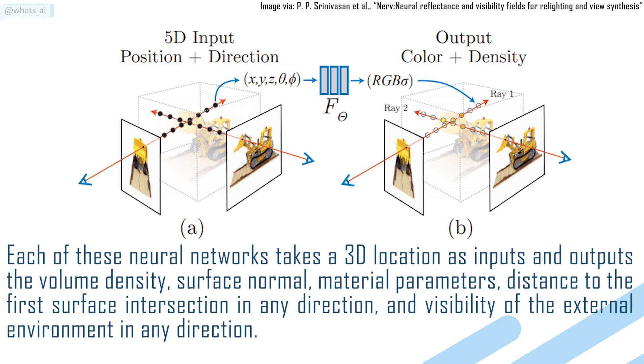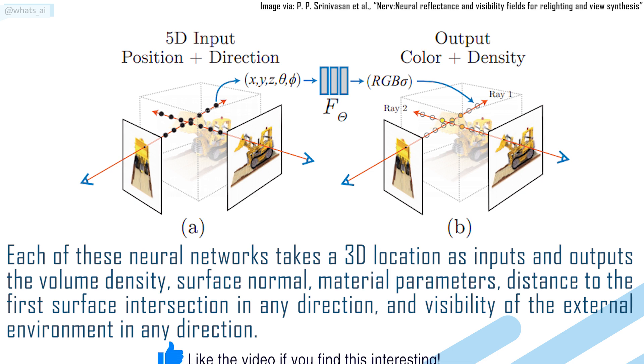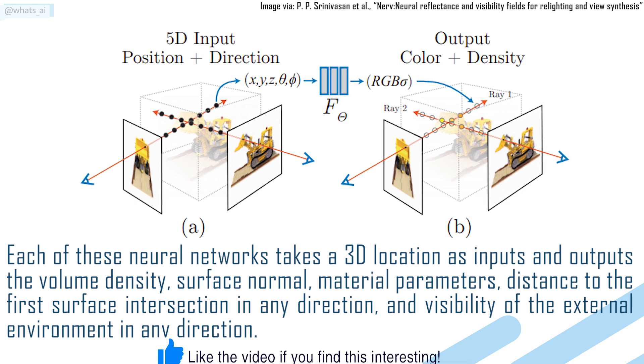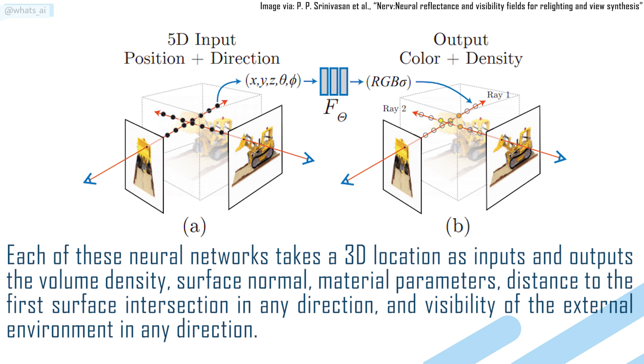Each of these neural networks takes a three-dimensional location as inputs and outputs the volume density, surface normal, material parameters, distance to the first surface intersection in any direction, and visibility of the external environment in any direction.